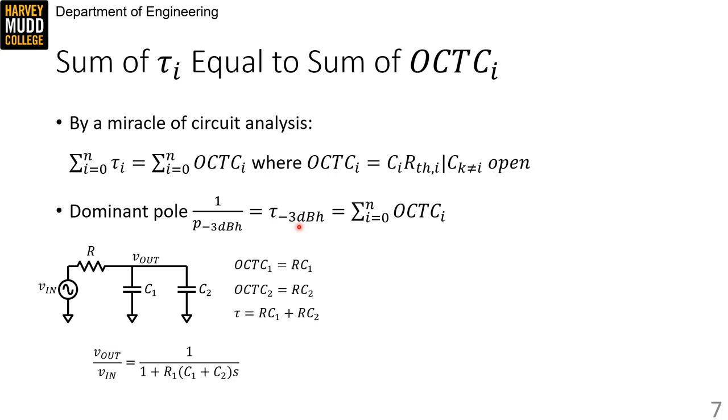The first open circuit time constant for C1 is equal to R times C1. That's because C2 will be an open circuit, so looking out of the terminals of C1, we'll just see R to ground.